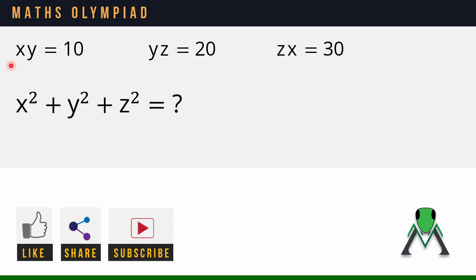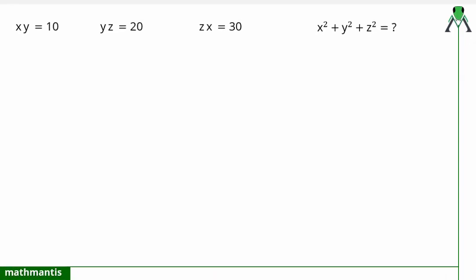Hello everyone, let us discuss this interesting algebra problem. We have been given xy = 10, yz = 20, zx = 30, and we have to find the value of x² + y² + z².